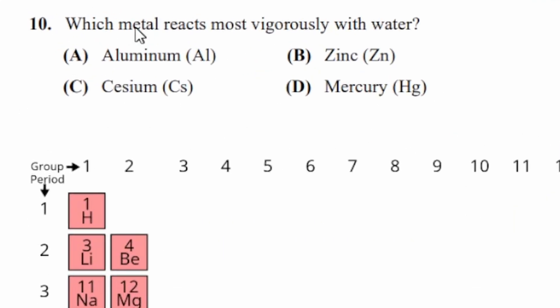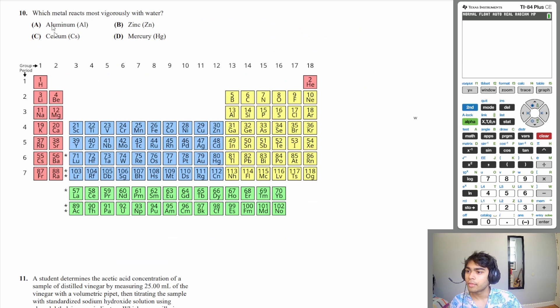Let's move on to question 10. Which metal reacts most vigorously with water? The metals that react a lot with water are going to be your alkaline metals. And those are going to be the elements on this column. So lithium, sodium, potassium, rubidium, cesium, francium. These are going to react a lot with water.